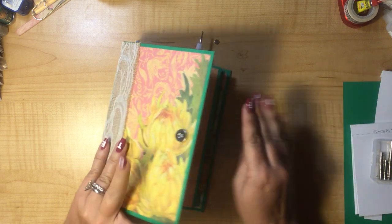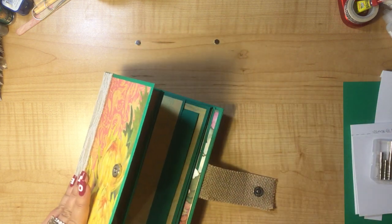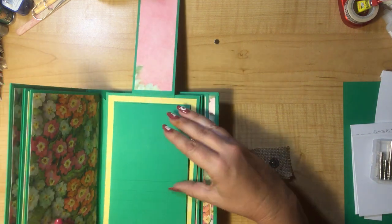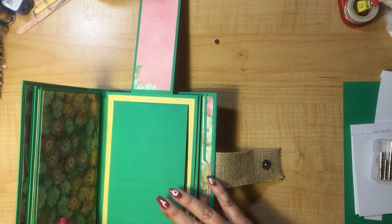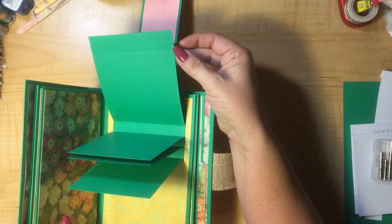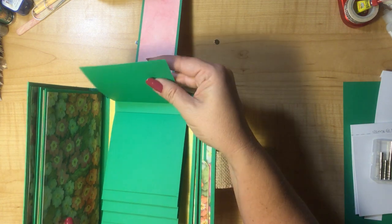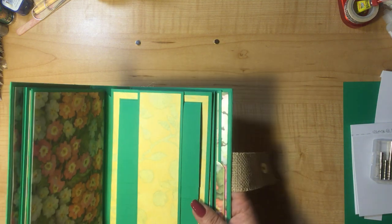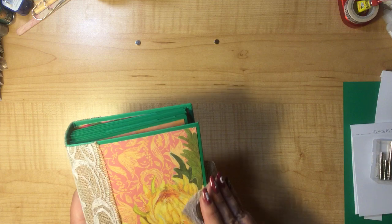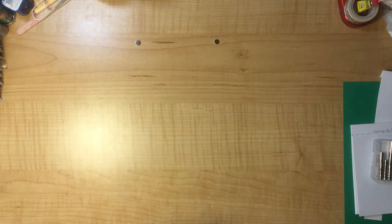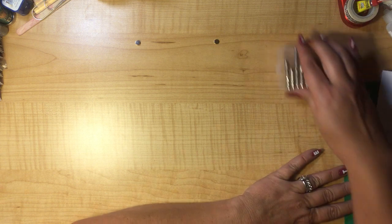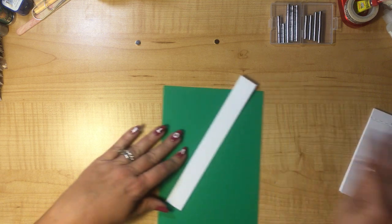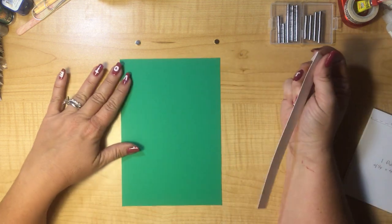It was actually a requested tutorial, which I was so honored by the request, and that was to show the waterfall feature for a mini album and how to put together a waterfall feature that holds multiple pictures or places for pictures and journaling that's magnetized. It's actually really easy to create once you know how to create it. You don't know what you don't know.